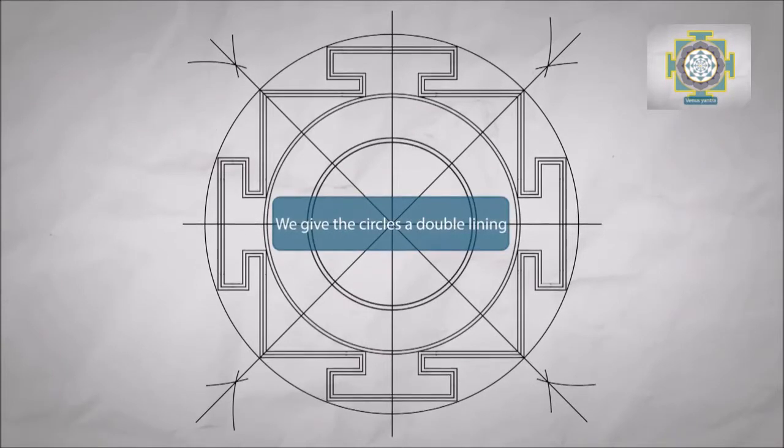We give the circles a double lining. We make one more division with the help of the compass.